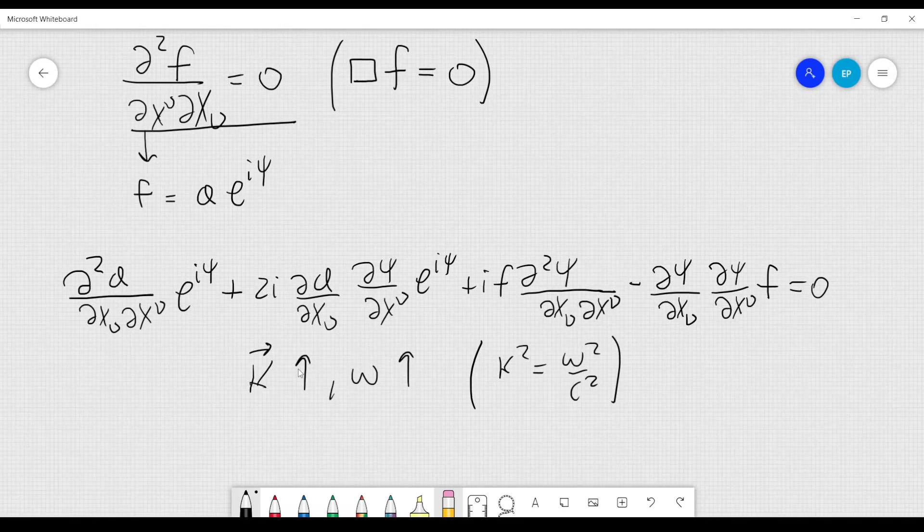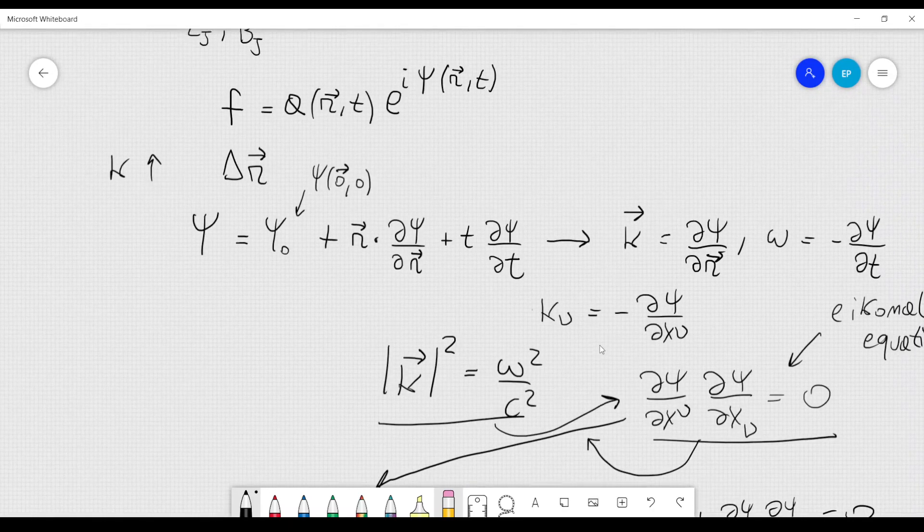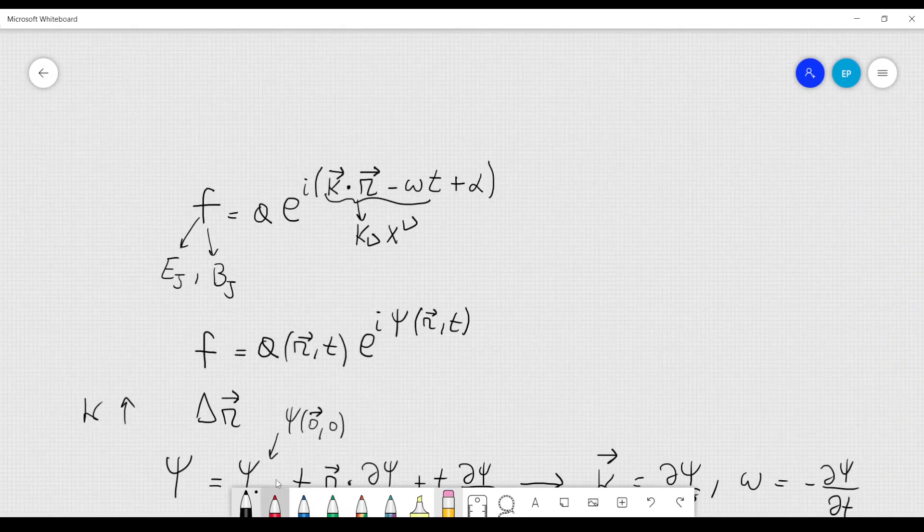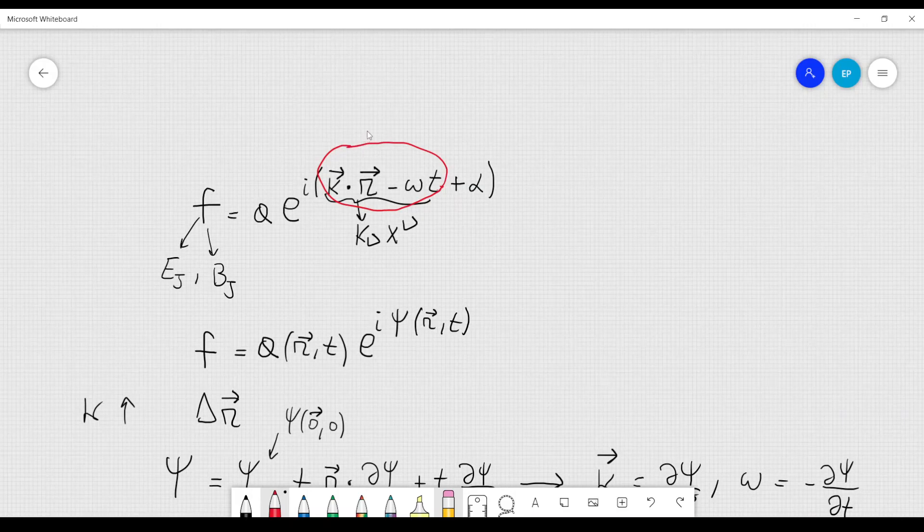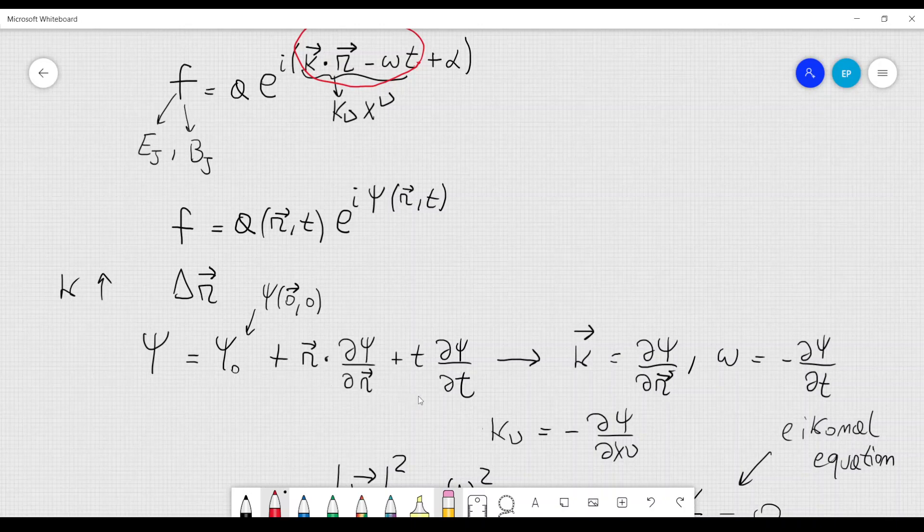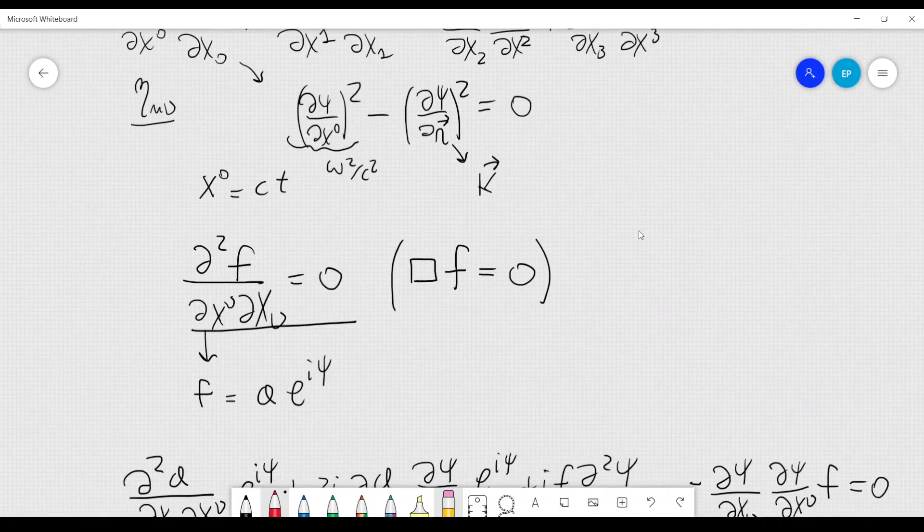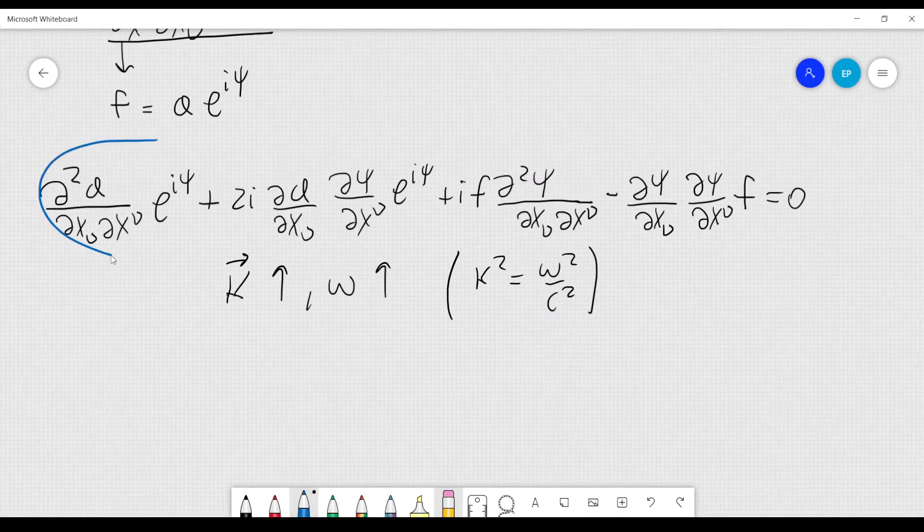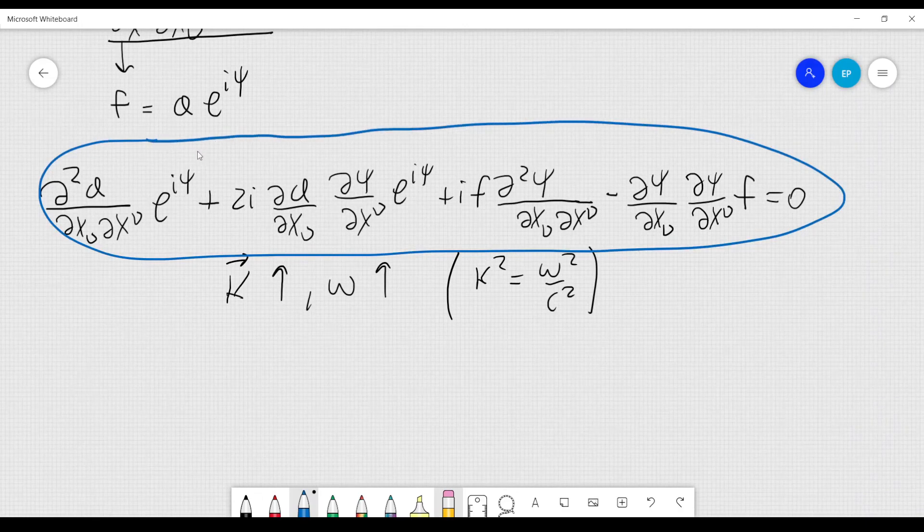This means that if we go back and check the expression for psi in this case here, psi will be almost equal to this expression here, because k is large and omega is large. So, when we expand psi using a Taylor series like this, psi will be almost equal to that expression. And since k and omega are large, also psi will be a very large quantity.